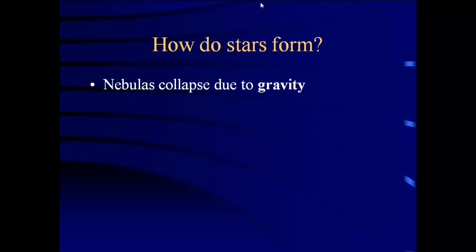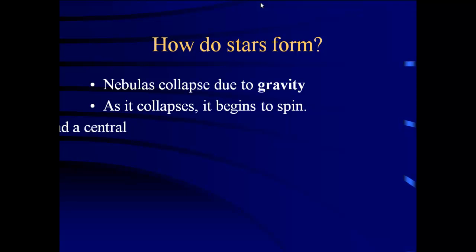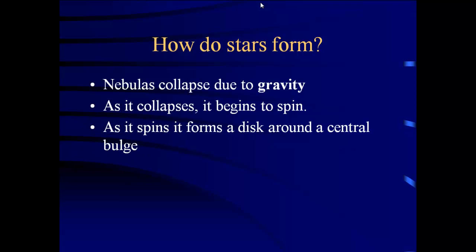First, something has to cause it to collapse. Once it begins to collapse, gravity is going to cause it to get smaller and smaller. It's going to begin to spin just like a skater — as that skater brings in their arms, they spin faster and faster — until eventually it's a dense central ball of gas. That's where the sun is going to be, with a thin disk around it where the planets form.